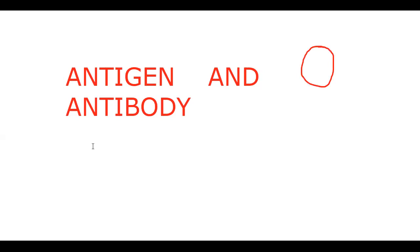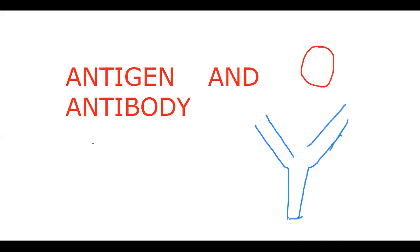Whatever we produce from the B-lymphocytes in response to that particular antigen, we call it an antibody. That we learn in immunology. So there is an antibody and there is an antigen — antigen and antibody.